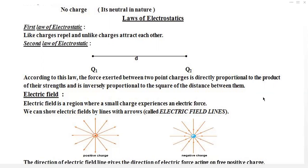Like charges means same charges — for example, positive and positive, or negative with negative charge. If two positive charges are brought close together, they will repel. Similarly, if we take two negative charges, both negative charges will repel each other.